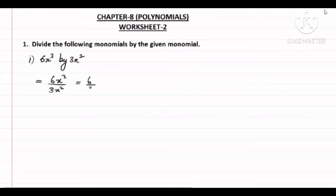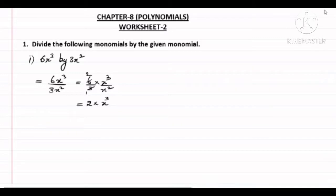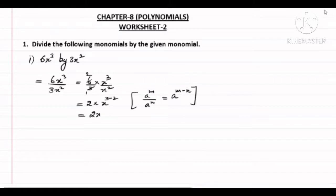Now I am separating the numbers and writing the variable powers separately. So this becomes 6 by 3 into x³ by x². 6 and 3 can be cancelled. So here we can write it as 2 into x³ divided by x². Now for exponents, we studied that a^m upon a^n — in division the powers subtract. So the power becomes 3 minus 2, that is 1. So 2x will be your final answer.